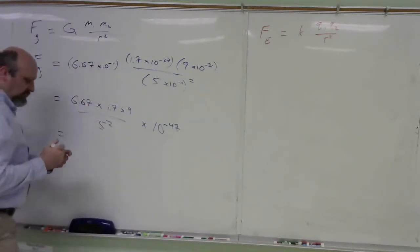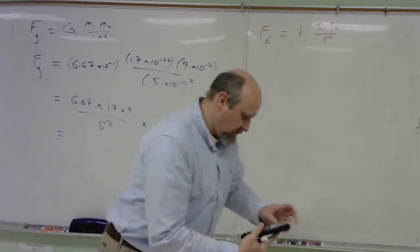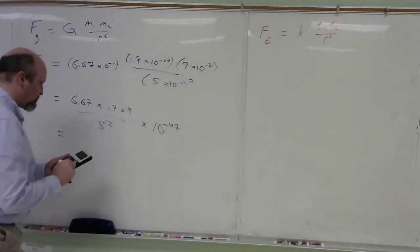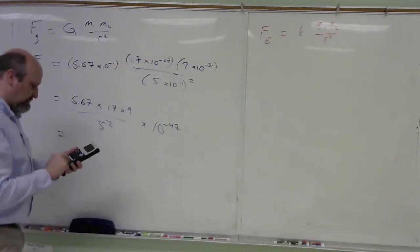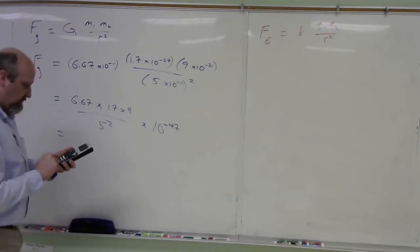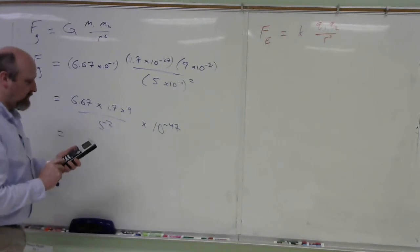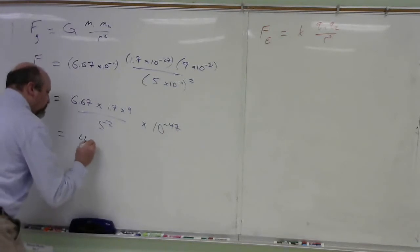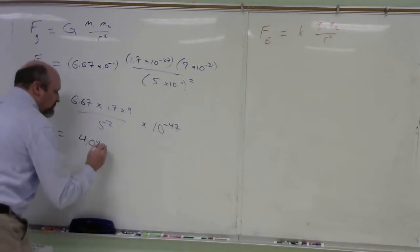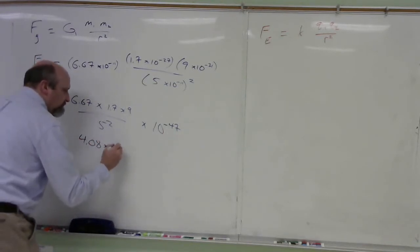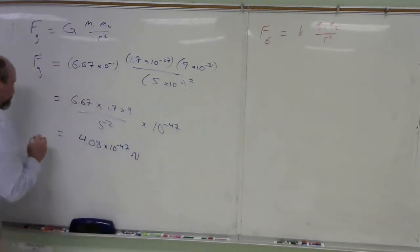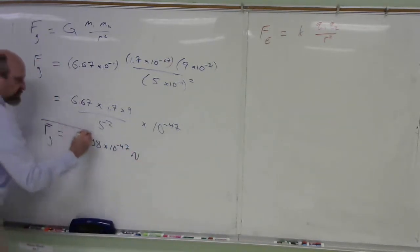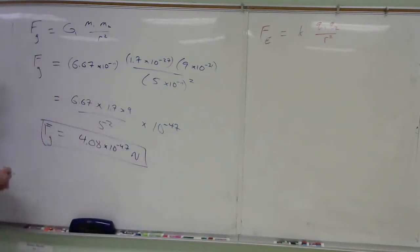I can punch this number in my calculator. And if I do that, and I punch in 6.67 times 1.7 times 9, and I divide by 5 squared, then I end up with 4.08. So my answer is 4.08 times 10 to the negative 47 newtons. That's my gravitational force between a proton and an electron in a hydrogen atom.